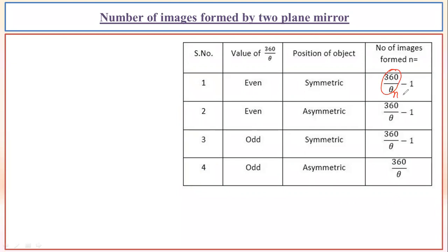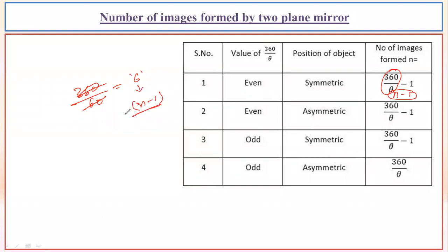For example, if we calculate 360 divided by 60, we get 6. So this would be n, and n minus one would be the number of images which is going to form, whether the object is placed symmetrically or asymmetrically. This applies for the even number case.